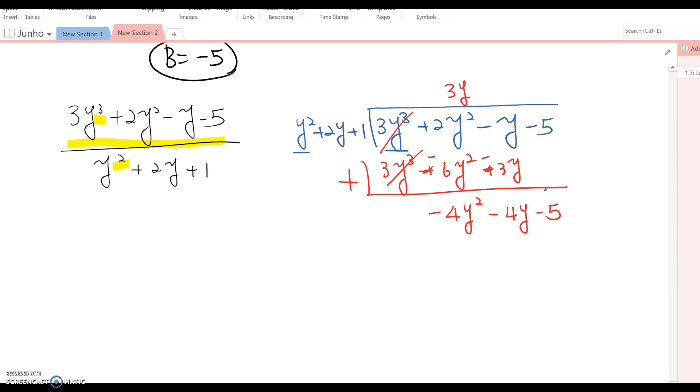Since the degrees are equal, we can do one more step. With -4, we get -4y² - 8y - 4. After subtracting, the remainder becomes 4y - 1.